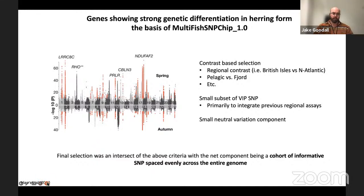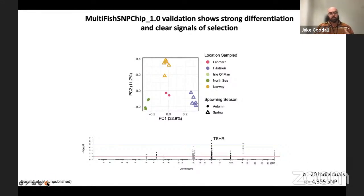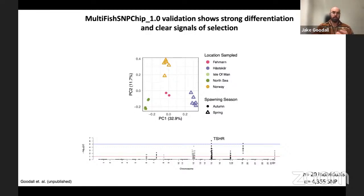These are some of the earliest examples of testing and validation of the SNP array, visualizing 20 individuals across about 4,300 SNPs. The PCA plot shows good separation between various populations sampled, following geographical spacing — individuals from the Baltic through the transition zone to the UK, with Norwegian samples at the top. We can also look at a GWAS contrast separating spring spawning versus autumn spawning individuals, and we essentially see peaks in regions we would expect, with TSHR being the highest signal in the data set — which is nice to see.